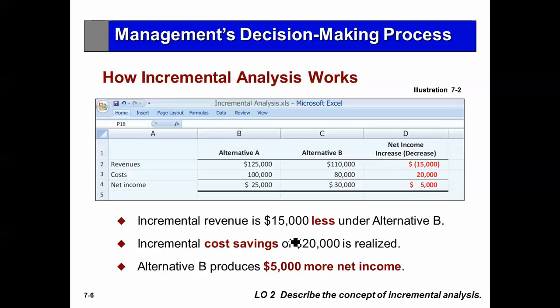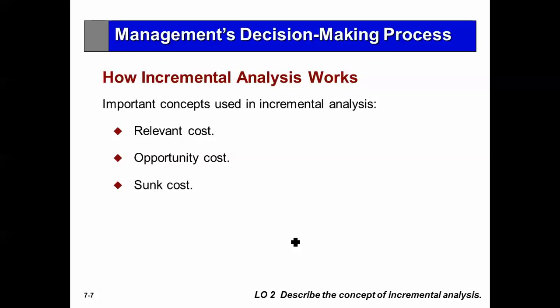If we choose Alternative B, we should have $5,000 more in net income. A relevant cost is a future cash flow — cash inflow or cash outflow — that is different between the alternatives being examined. The revenues represent a cash inflow and the costs a cash outflow that differ between the alternatives.